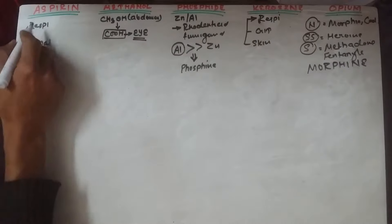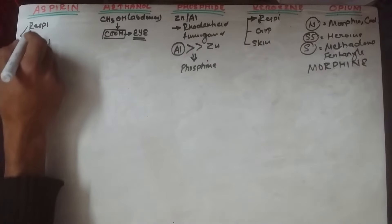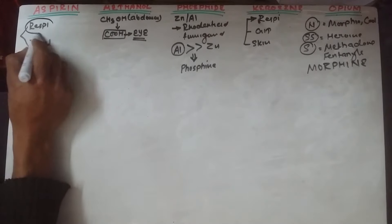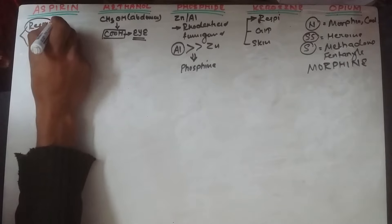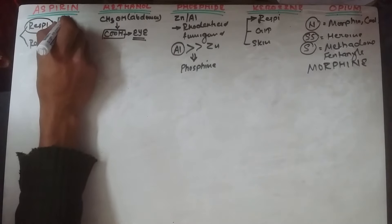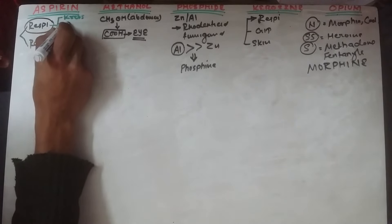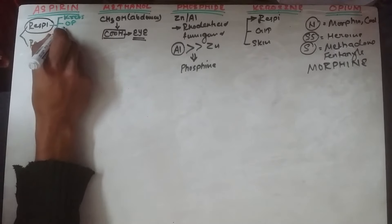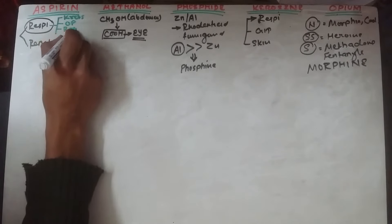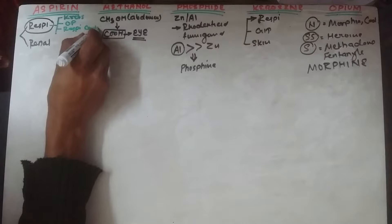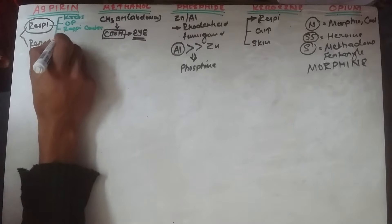Aspirin causes respiratory symptoms in four ways: dysregulation in the Krebs cycle, dysregulation in oxidative phosphorylation, direct depression of the respiratory center, and inhibition of mitochondrial respiration.